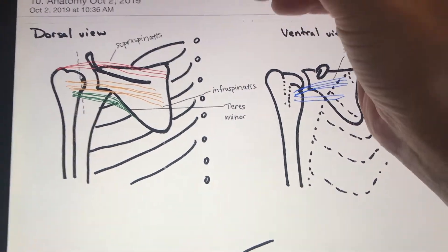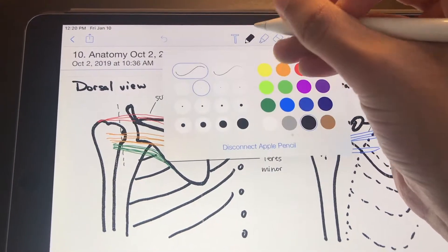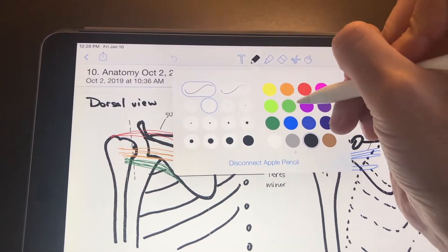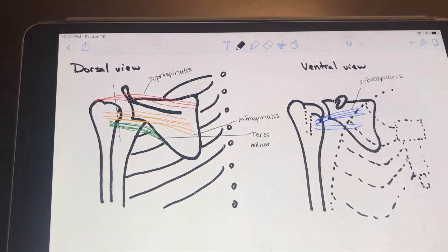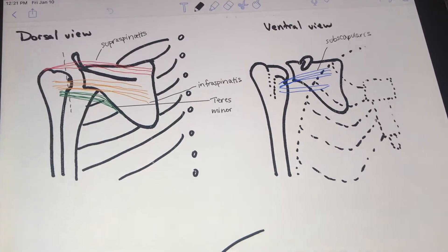And I would just replicate that obviously using Notability. So I would switch my pen colors here to the different colors to match what he was doing and I didn't have to bring a whole box of colored pens with me or a whole bunch of sheets of paper.